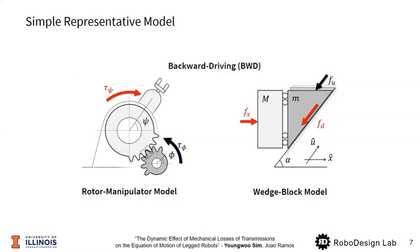Backward driving case occurs when energy flows in the opposite direction by pushing the block with force F_x to drive the wedge. This is equivalent to an external force applied to the manipulator's end effector to backdrive the rotor through the mechanical transmission.